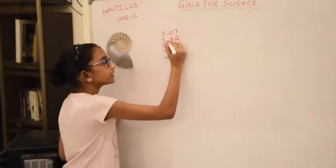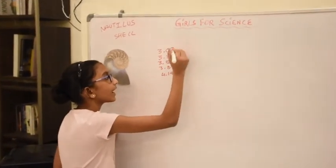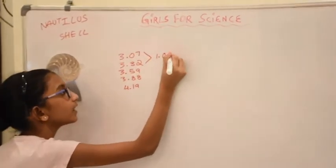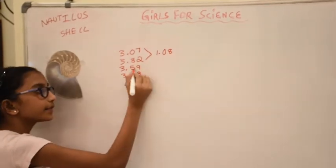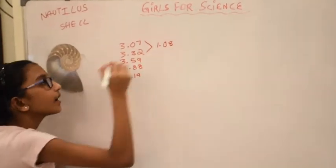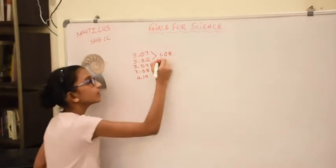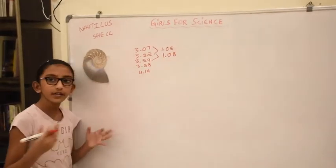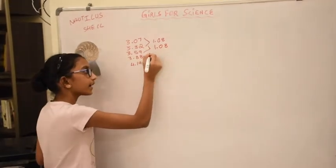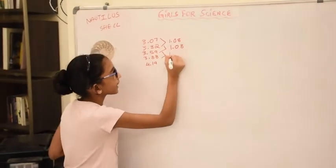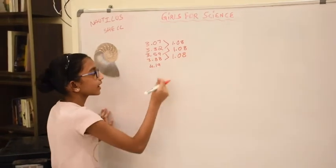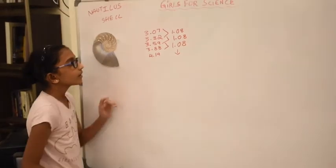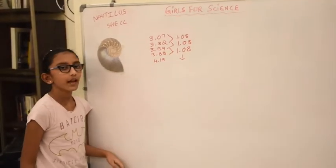If we take 3.32 and divide it by 3.07, we get 1.08. Let's do it again with 3.79, we divide it with 3.32, we get 1.08. Let's do it again with 3.88 and with 3.59. And as you can see a pattern starts to appear and this pattern keeps on going with all of the numbers.